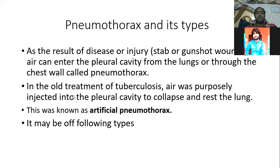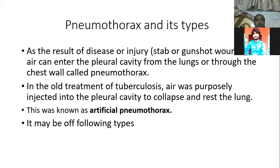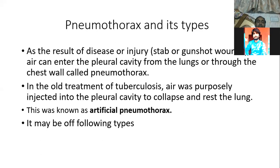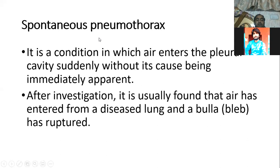In the old treatment of tuberculosis, air was purposely injected into the pleural cavity to collapse and rest the lungs. This is called artificial pneumothorax. It is also called spontaneous pneumothorax — a condition in which air enters the pleural cavity suddenly without its cause being immediately apparent.